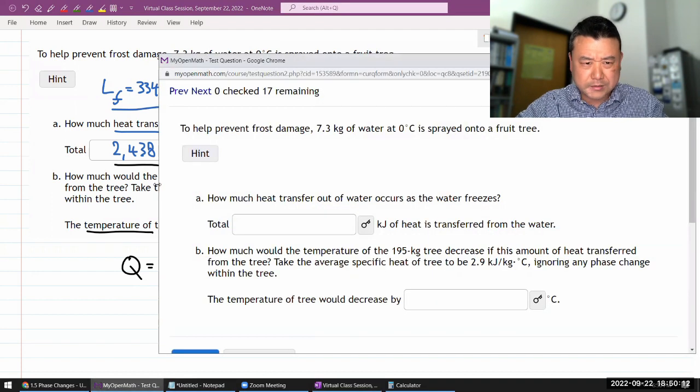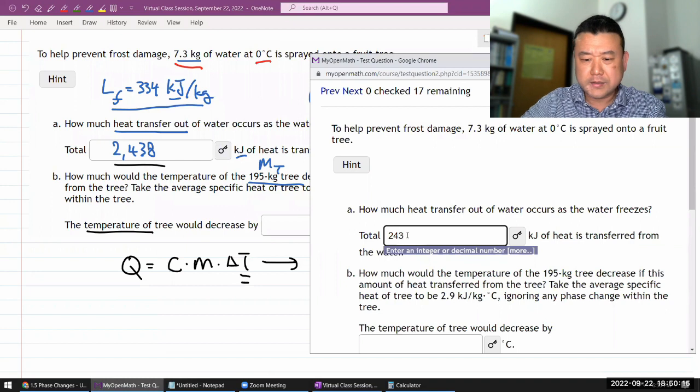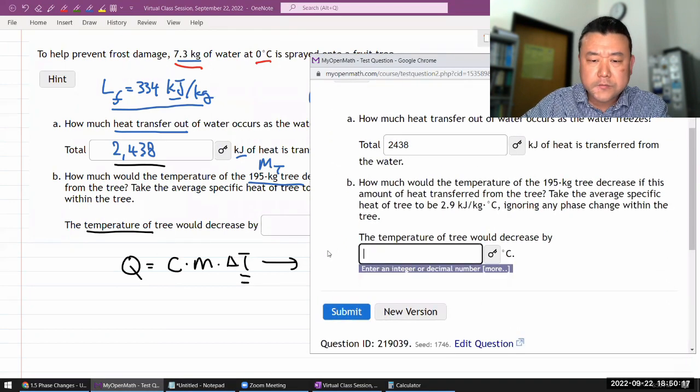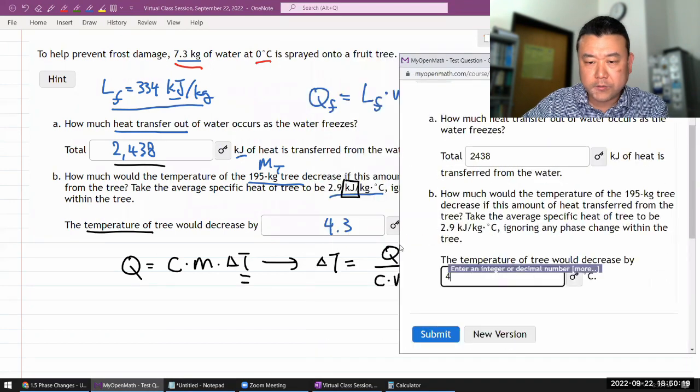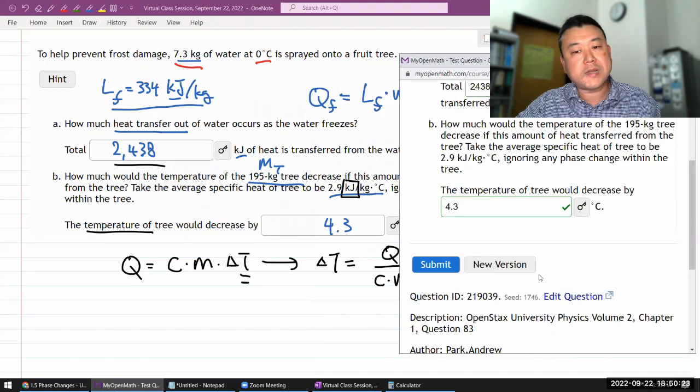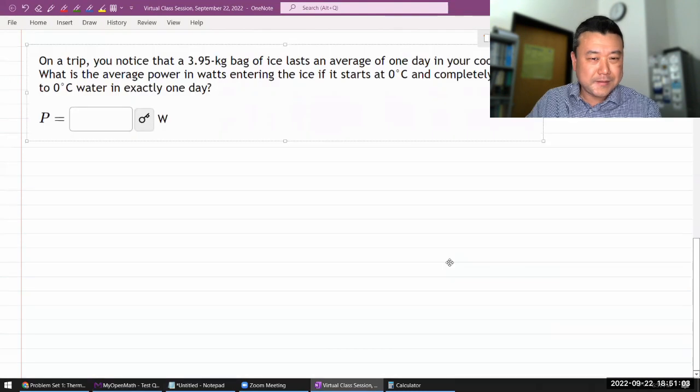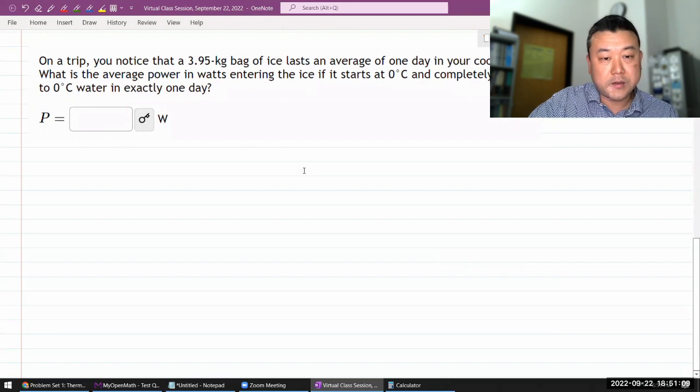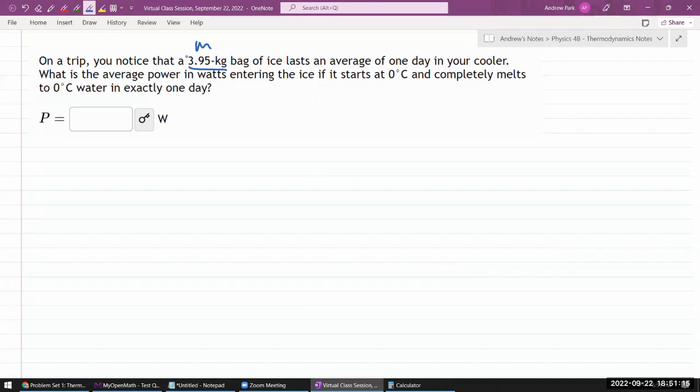That's one example of latent heat. Let me get the other example. Before I do that, let me just make sure I didn't make any mistakes. I probably didn't. Now, in physics 4A, I normally do this for every question. With physics 4B, I will, at some point, stop plugging in the numbers. This is the next question. It says, on a trip, you notice that some amount of ice, some mass of ice, lasts an average of one day in your cooler.